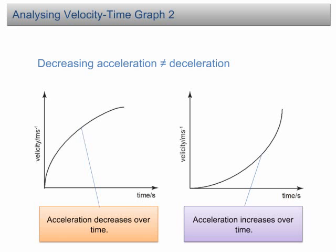In the first graph, the gradient decreases over time. This decreasing gradient suggests that the acceleration decreases over time. Keep in mind that a decreasing acceleration doesn't mean deceleration. The velocity still increases over time. However, the rate of increment or acceleration decreases over time.